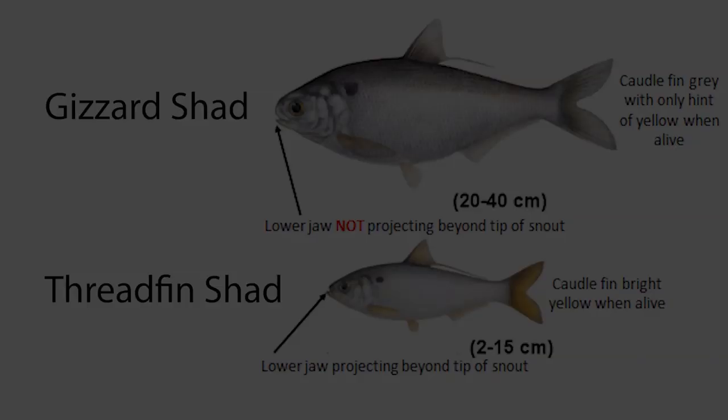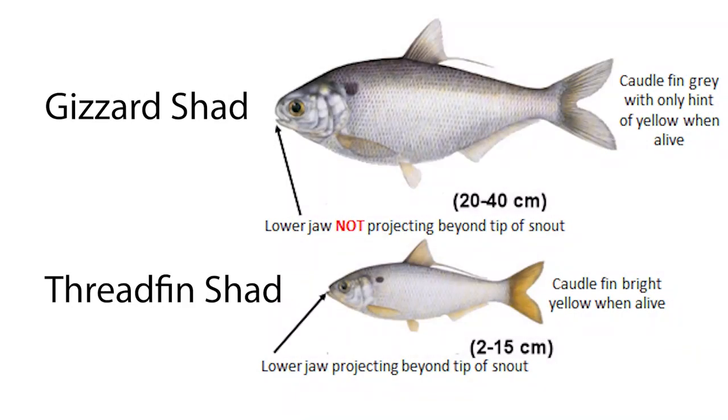Now we're going to move over to the Garmin Striker 4 and we're going to look at a few screenshots. We're going to dissect and interpret those screenshots from the sonar to hopefully help you better identify bait fish on your Garmin Striker 4. To help us interpret our sonar returns and know what kind of bait fish we're dealing with, we're going to learn a little bit about the gizzard shad and the threadfin shad to give us some background to help us identify them better.